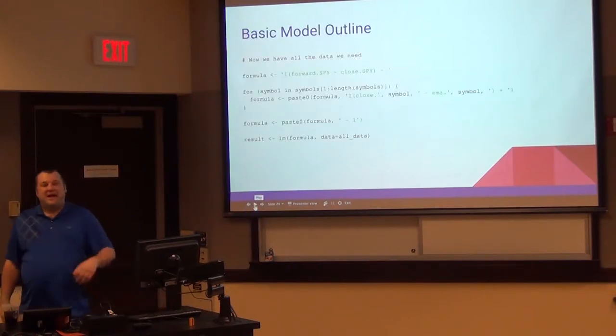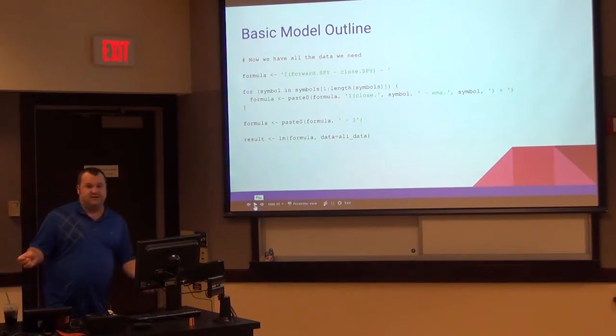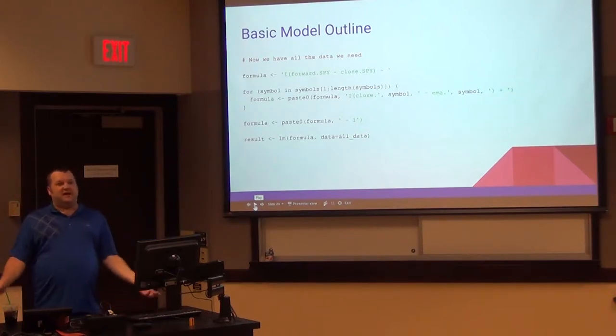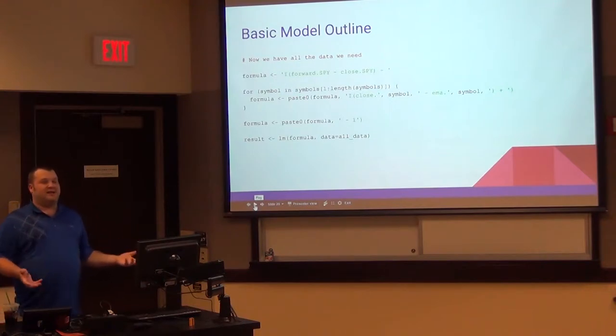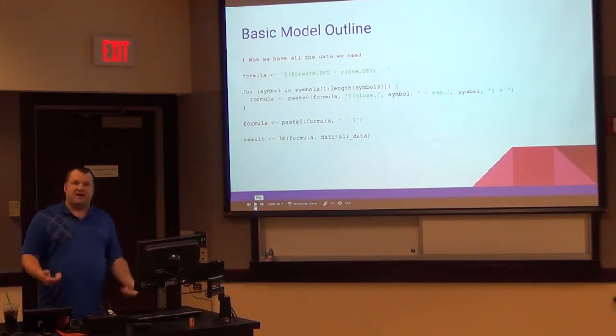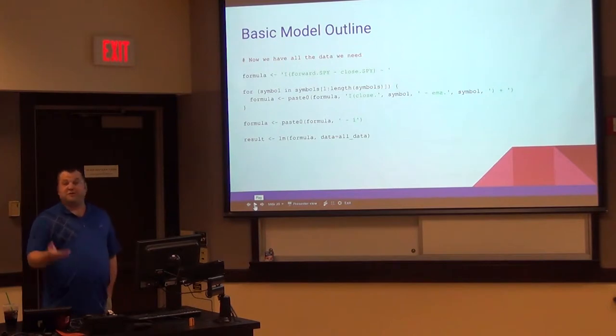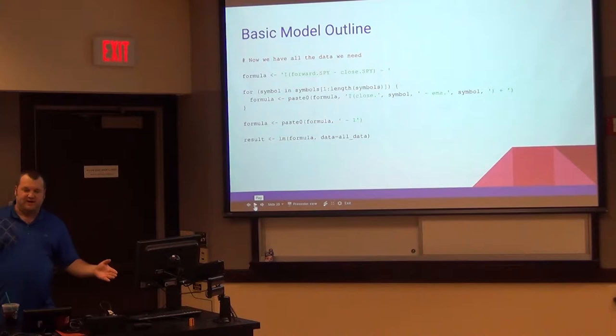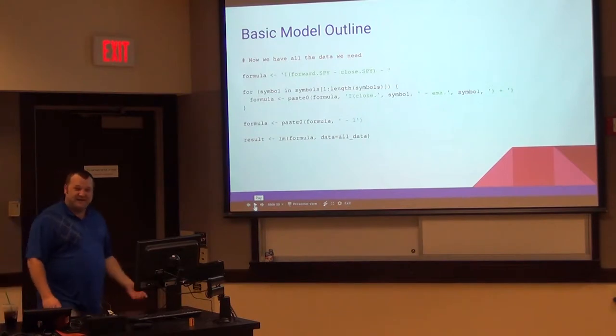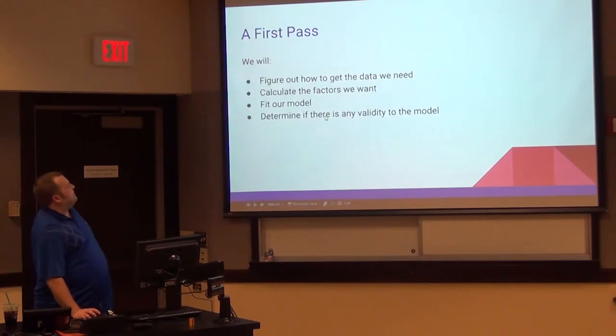We're going to create a formula. And what we're going to try to predict is the forward SPY minus the close of SPY, which is our future price minus our current price. And we're going to try to predict that with the difference of the close of each symbol and the EMA of each symbol. We'll call that a return for our purposes. We're going to create the formula. We're also going to kill the intercept. This minus one at the end. We're just going to get rid of the intercept. And simply use R's lm function to fit it. Could I just ask you a question? Could you remind the students what is an EMA? Oh, EMA, I'm sorry. Exponential moving average. So an exponential moving average simply takes in the historical price series and waits. It lags the price, essentially. It keeps a historical record of the price. And we're taking the current price minus the historical record of that price as our factor.